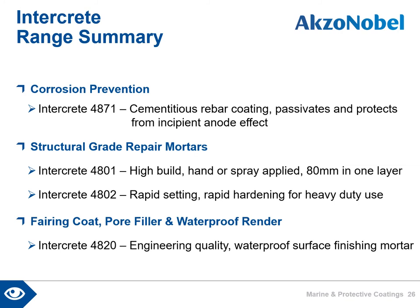Looking at the Intercrete range specifically, our first line of defence is with corrosion prevention. Intercrete 4871 is our cementitious coating for steel reinforcement protection — it passivates and protects from incipient anode effect. We have two structural grade repair mortars: Intercrete 4880-1 is a high-build hand or spray-applied mortar, easily achieving up to 80mm in a single layer, even overhead. Intercrete 4880-2 is a rapid-setting, rapid-hardening mortar for heavy-duty use, typically on trafficked areas.